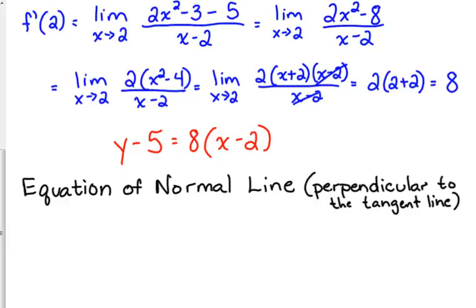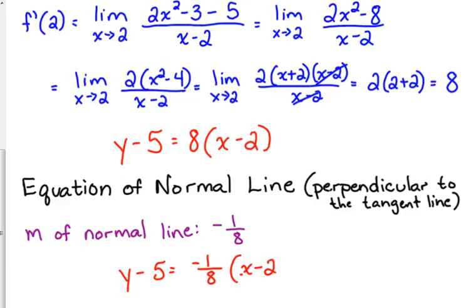They have the opposite reciprocal slope. So, you flip it and you change the sign. So, the slope of the tangent line was 8. So, that means the slope of the normal line for this problem is negative 1 eighth. So, the equation of the normal line is y minus 5 is equal to negative 1 eighth times x minus 2. They go through the same point. They go through the point 2, 5, but they're going to be perpendicular to each other. The tangent line lies tangent to the curve and the normal line lies perpendicular to that line.